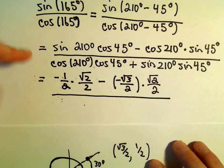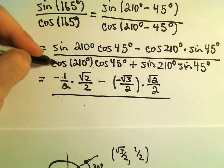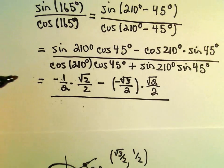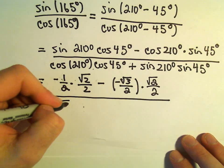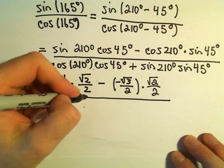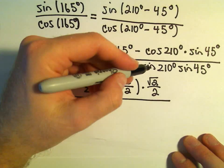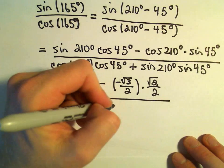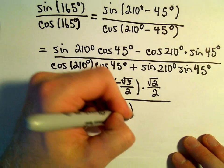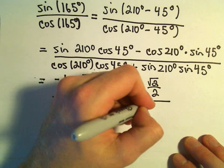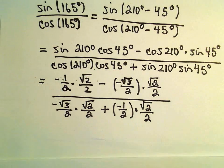In the denominator, we have cosine of 210 degrees, which was negative root 3 over 2. Cosine of 45 degrees is root 2 over 2 plus sine of 210 degrees, which was negative 1 half. Sine of 45 degrees will be root 2 over 2.